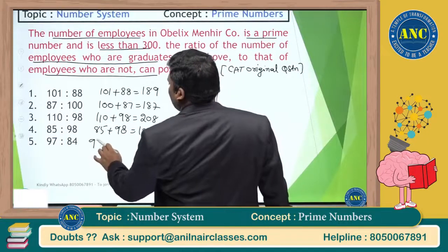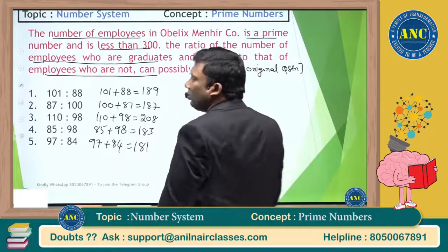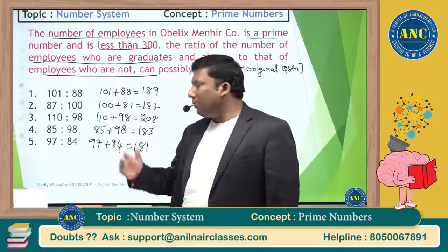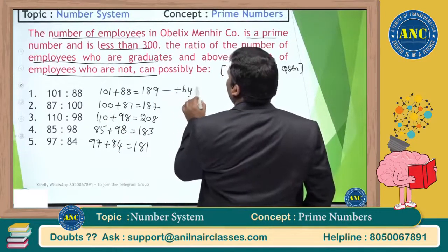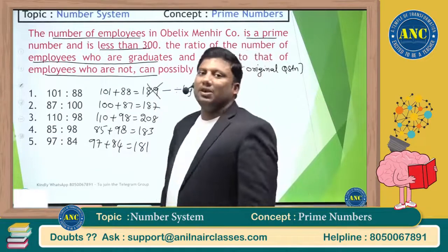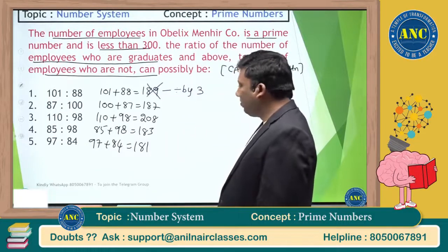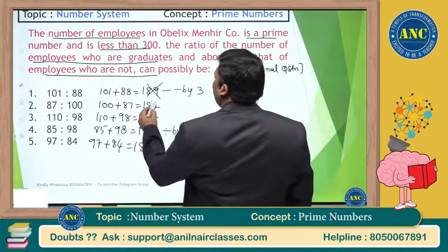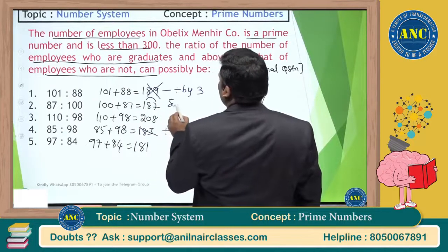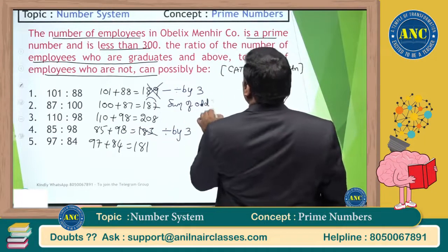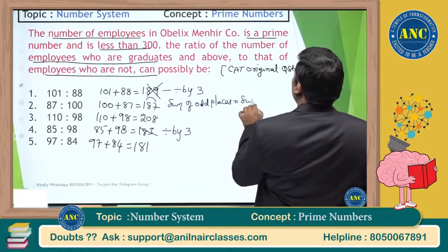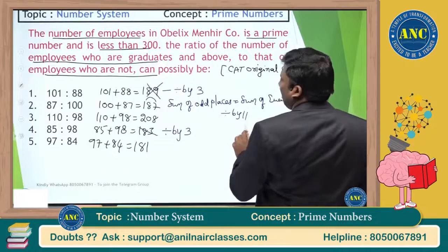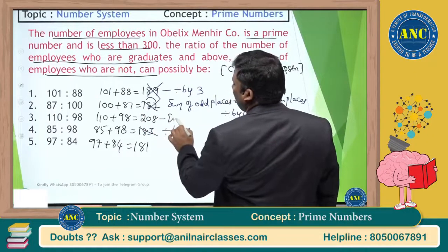The answer options include 189, 208, 183, 187, and 181. Check 189: digit sum is 18, divisible by 3 — composite. Check 183: digit sum is 12, divisible by 3 — composite. Check 187: sum of odd-place digits equals sum of even-place digits — divisible by 11 — not prime.